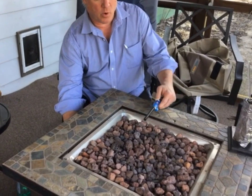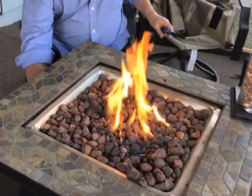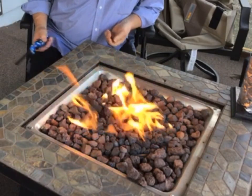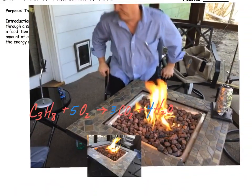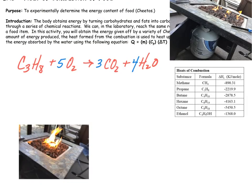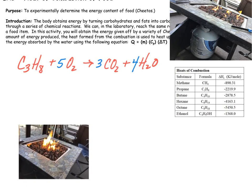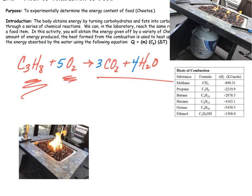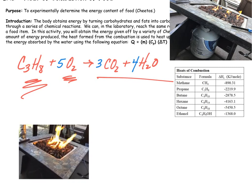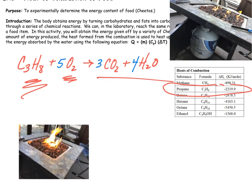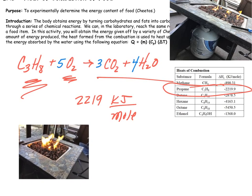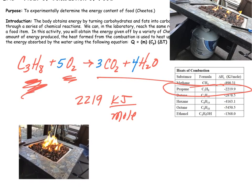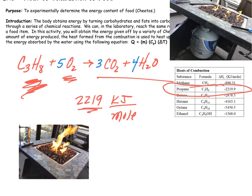We're outside on the screen porch lighting up the propane fire pit — a perfect example of combustion. Here's the combustion equation for propane, C3H8. All combustion reactions require oxygen and all of them produce CO2 and H2O. In this case, propane gives us how much energy is given off: 2,219 kilojoules per mole. So for each mole of C3H8 that we combust, we get 2,219 kilojoules of energy.